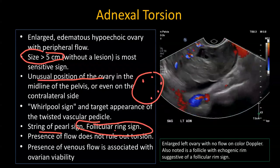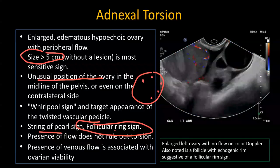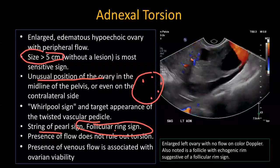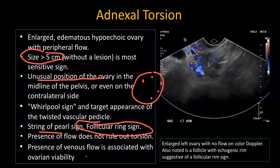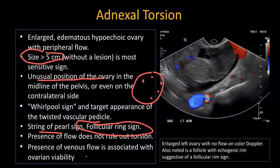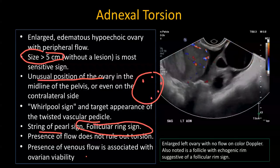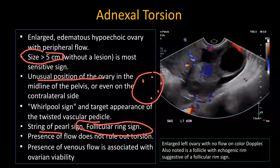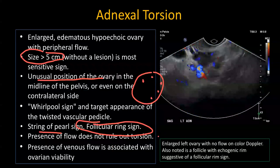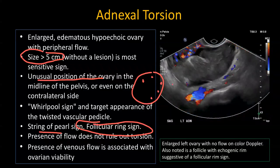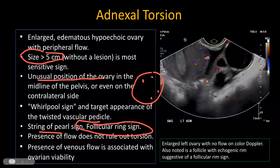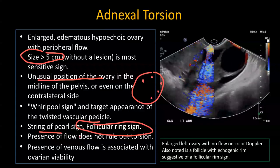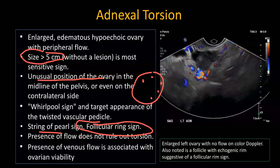An important caveat is that presence of blood flow does not rule out torsion. The ovaries have dual arterial blood supply — one from the adnexal branches and the other from the uterine arteries. In the initial phase, the arteries may be spared with only lack of venous flow. Always make sure the technician documents both arterial and venous waveforms. Presence of venous flow is associated with viability — if the ovary is detorsed in the OR, chances of viability are higher when persistent venous flow is present.